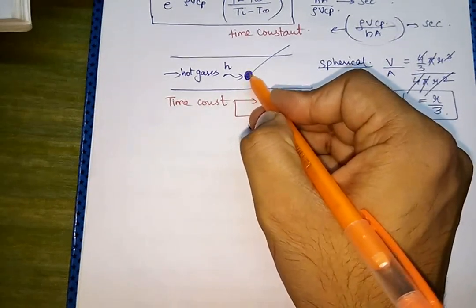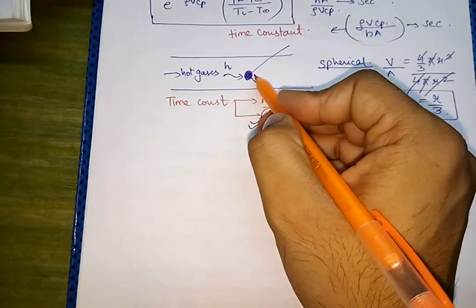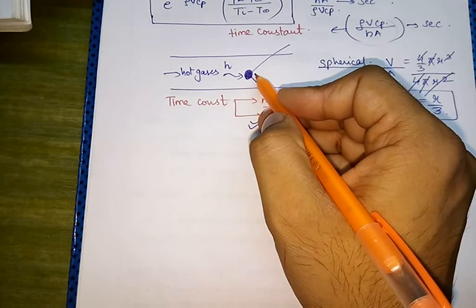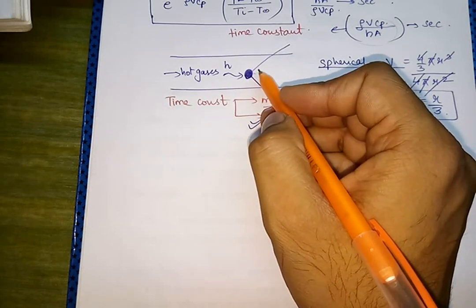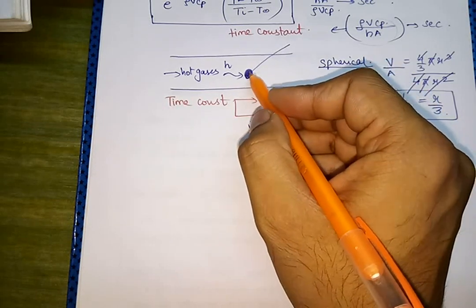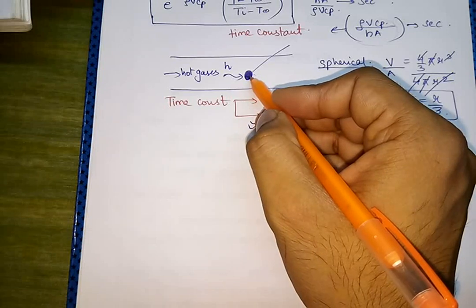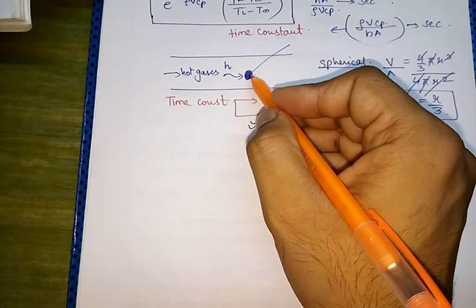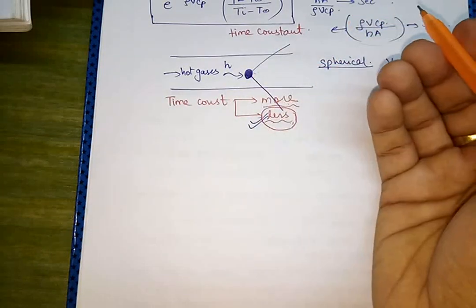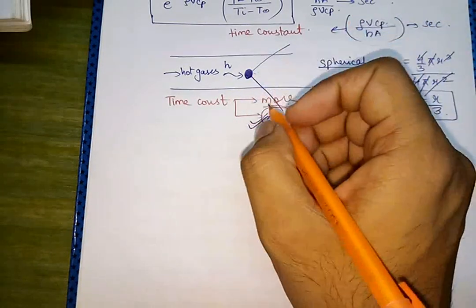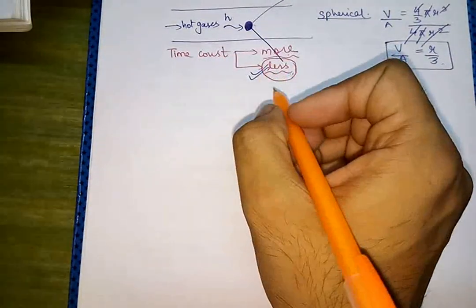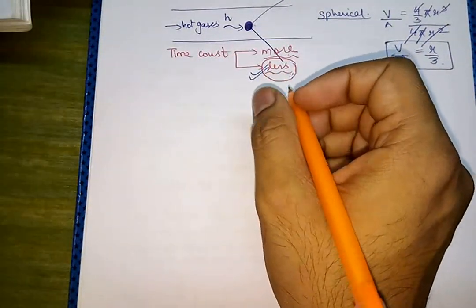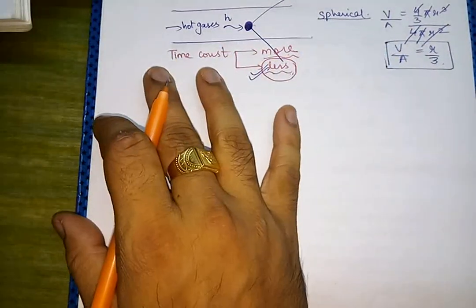The time constant should be small so that a small amount of heat can be extracted from the surroundings quickly. Now we will study an important topic in unsteady heat conduction: lumped analysis.